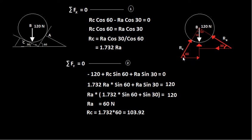Completing the right triangle for the reaction at C, the horizontal component acts in the positive x-direction and the vertical component acts in the positive y-direction.